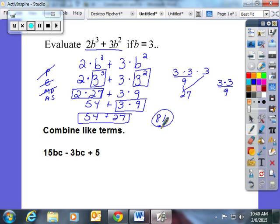Last, I'm going to combine like terms. If I have 15 BC's and I take away 3 of them, 15 minus 3 is going to give me 12 BC's. And I'm going to leave plus 5.